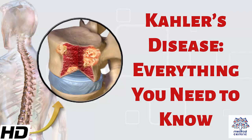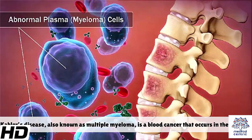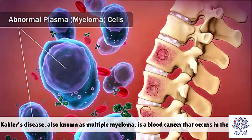Today's topic: Kahler's disease – everything you need to know. Kahler's disease, also known as multiple myeloma, is a blood cancer that occurs in the plasma.